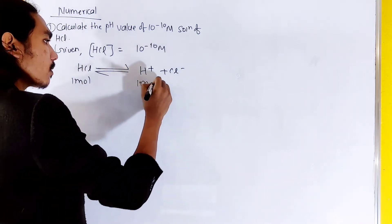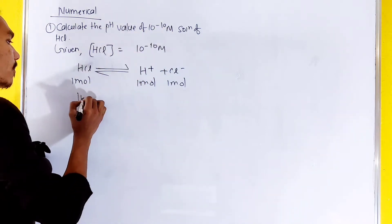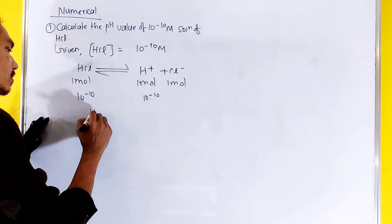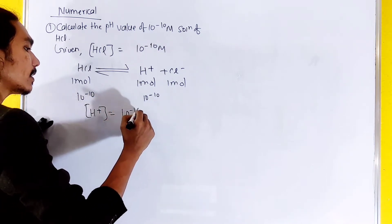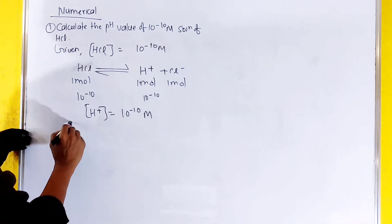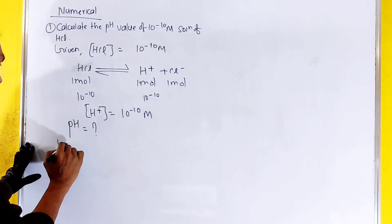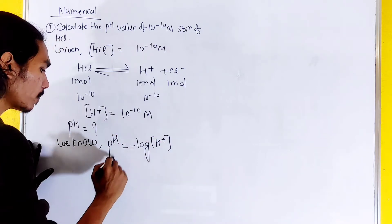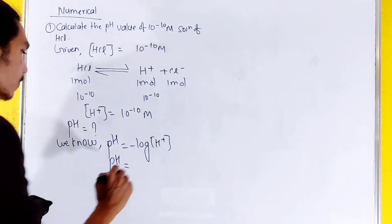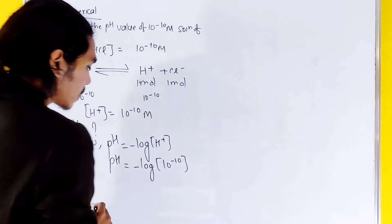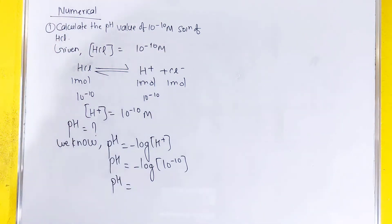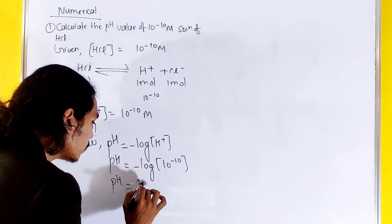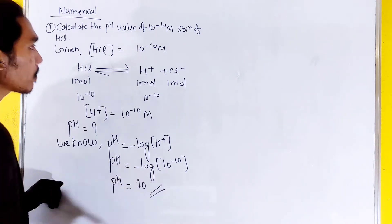For this question, the concentration of HCl is 10 to the power minus 10 molar. So the H⁺ concentration is 10 to the power minus 10 M. We know pH equals negative log of H⁺. So pH equals negative log of 10 to the power minus 10, which gives us a pH value of 10.